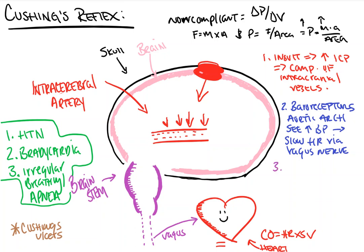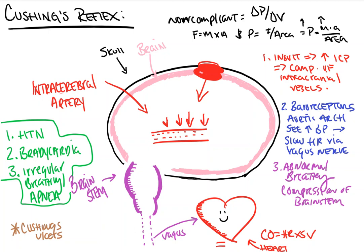The third and final phase is abnormal breathing, which is a result of compression of the brainstem. As ICP increases, because the skull is a bony structure the brain has to go somewhere. The space where the brainstem leaves the skull is called the foramen magnum. The brain begins to herniate into that space, putting direct pressure on the brainstem. As we know, the brainstem is responsible for our breathing — this can result in an abnormal breathing pattern, or sometimes simply apnea.